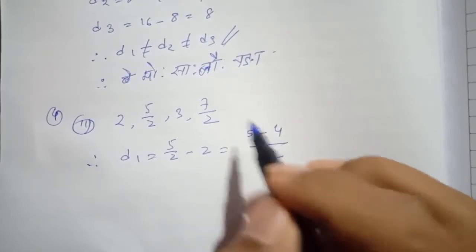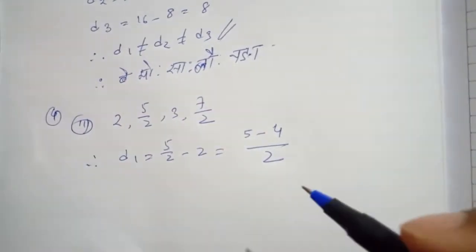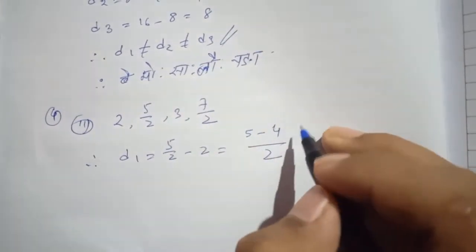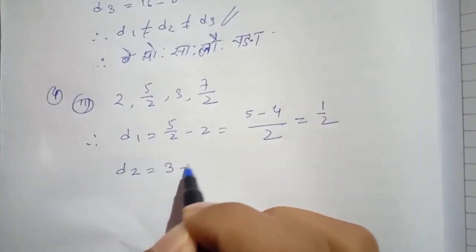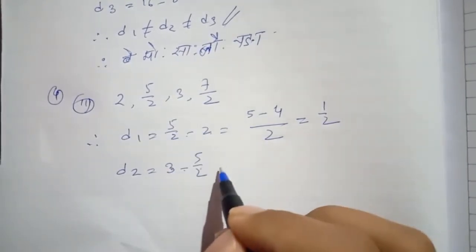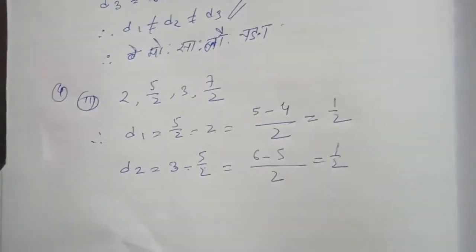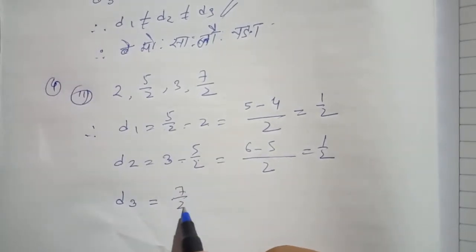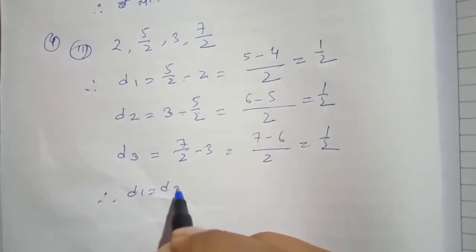The number is 1 by 2. D2 equal to 3 minus 5 by 2. The next value is 7 by 2 minus 3. 2 minus 3 is per 2 minus 6. Therefore D1 is equal to D2 is equal to D3.